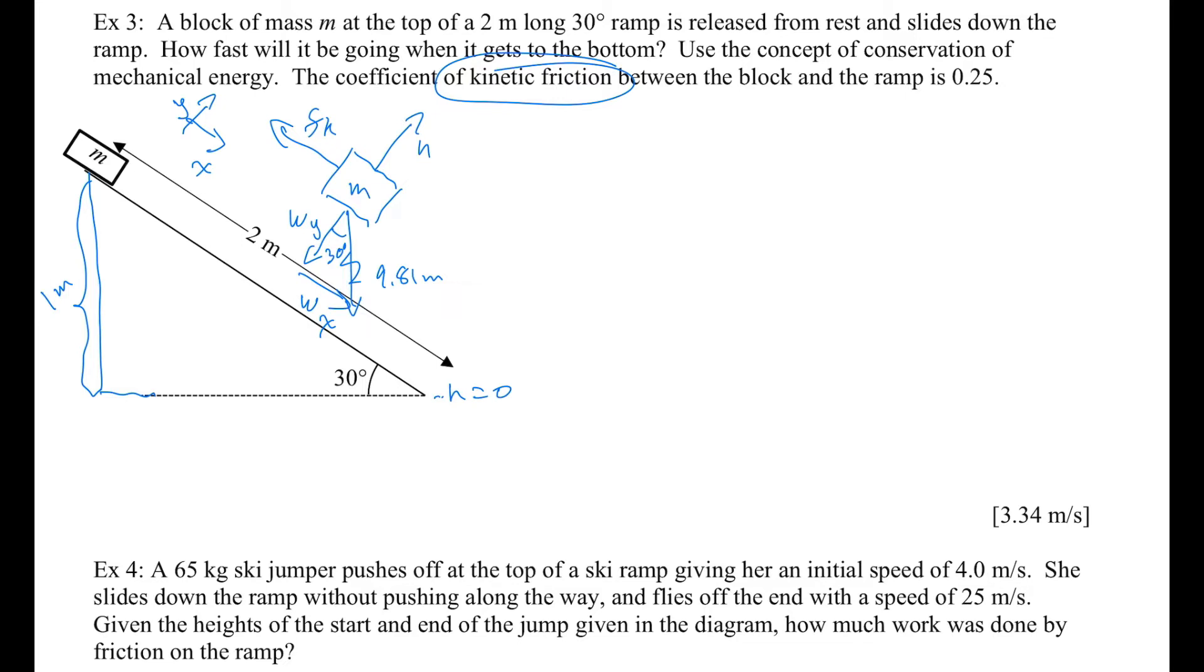To get friction, I need to know what n is. Well, n is equal to wy because those are the only two forces in the new y direction. And that is equal to w times the cos of 30. So if I do w times the cos of 30, I get 8.496m.